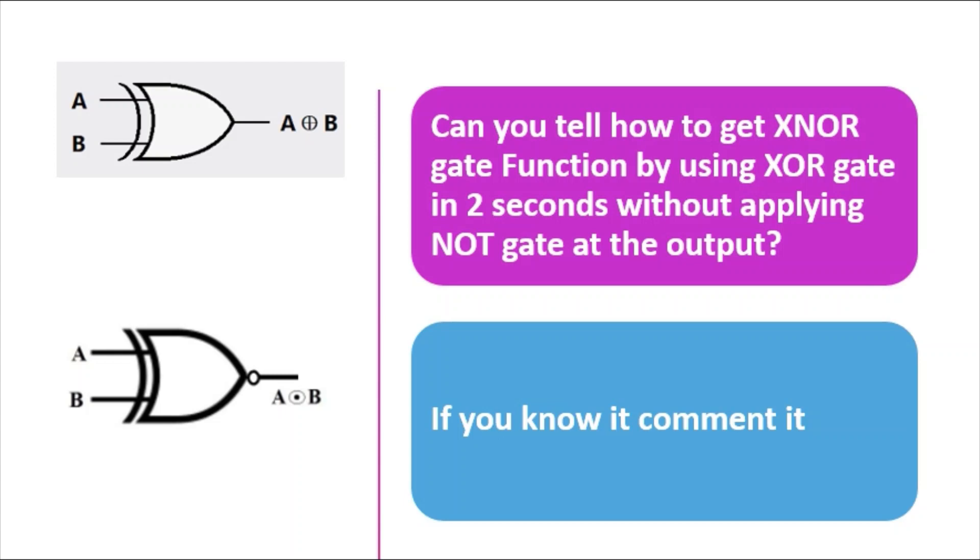Can you tell how to get XNOR gate function by using XOR gate in two seconds without applying NOT gate at the output? If you know it, please comment it.